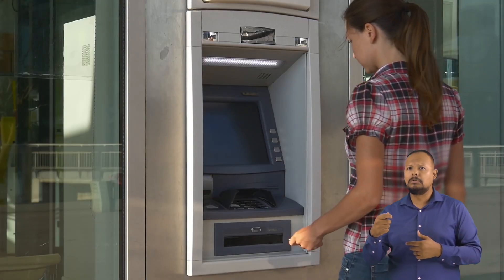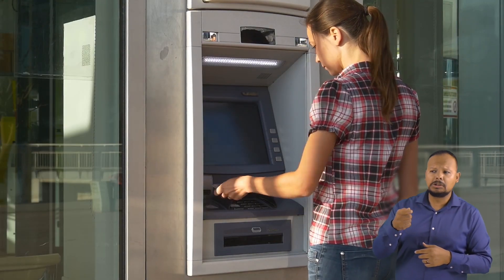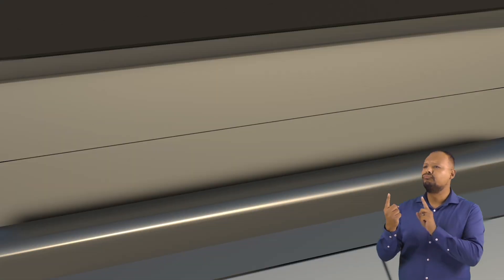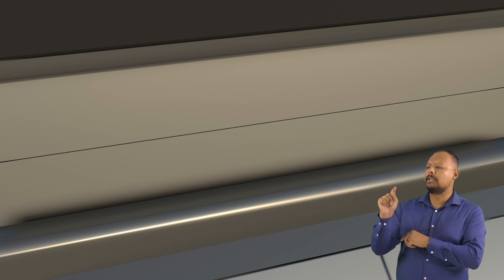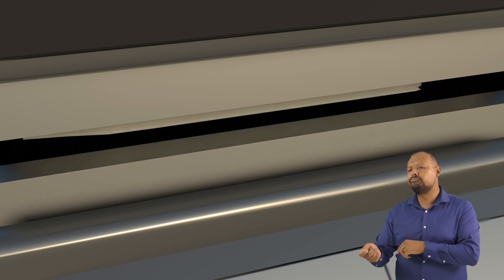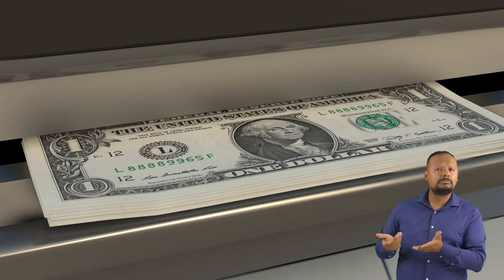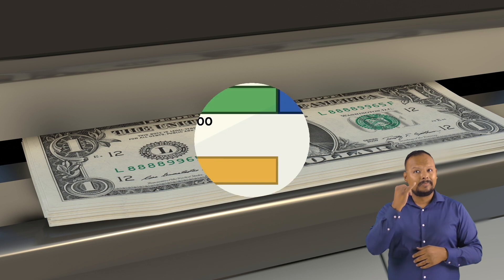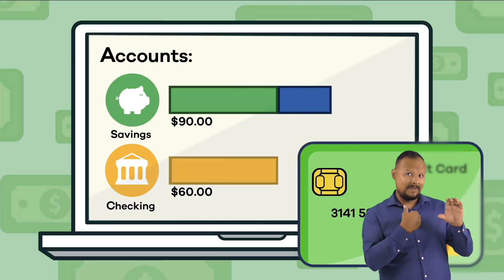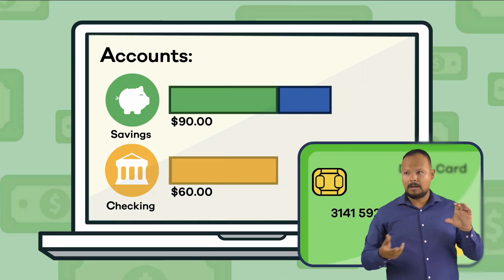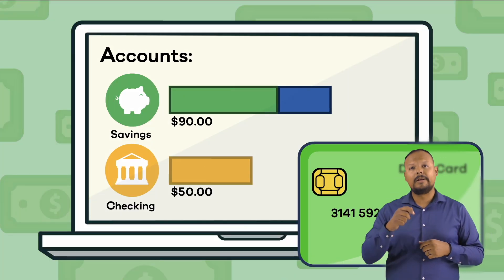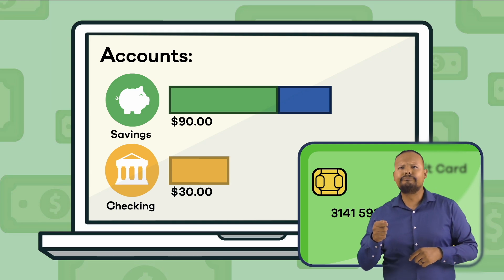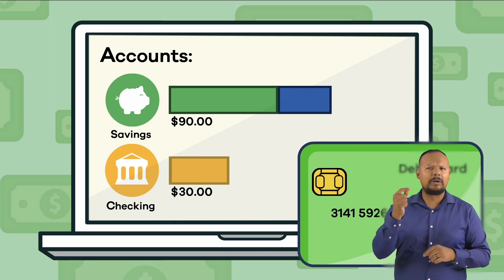You can even head over to the ATM with your debit card and get some cash from that magic machine — if you have money in your account, of course. When you use a debit card, the amount you spend is taken immediately out of your checking account.